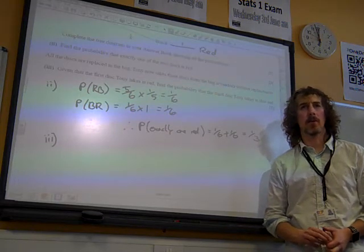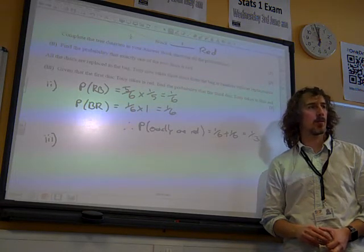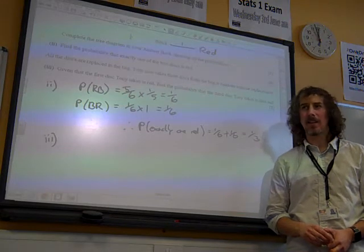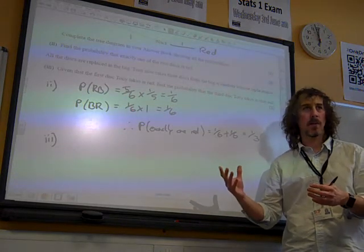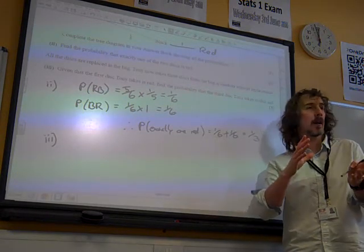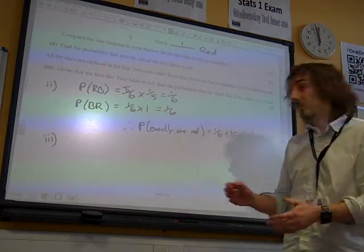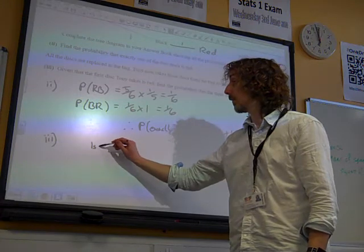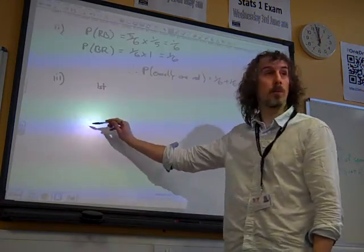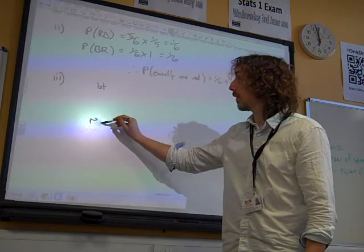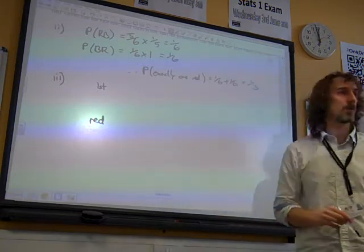I think we need to go with the tree diagram, don't we? And when we do our tree diagram, this 'given that' means that we're kind of coming into our tree diagram partway through the process. We don't actually have a choice about this at all. The first disc, we were told, was red.